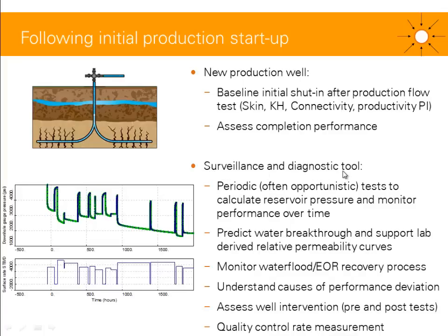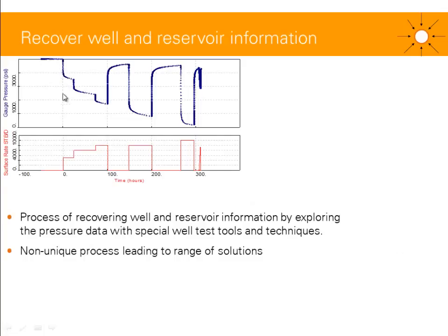During production, well test analysis is a very powerful surveillance and diagnostic tool. You'll end up with periodic tests — more than 95% of which are opportunistic — helping you calculate reservoir pressure for each PBU, monitor performance over time, detect waterfront and predict water breakthrough a couple of months in advance, support lab-derived relative permeability curves, monitor your water flood or other recovery process, understand causes of performance deviation, prepare better-tailored well interventions, assess well interventions with pre- and post-tests, and quality-control your rate measurement.